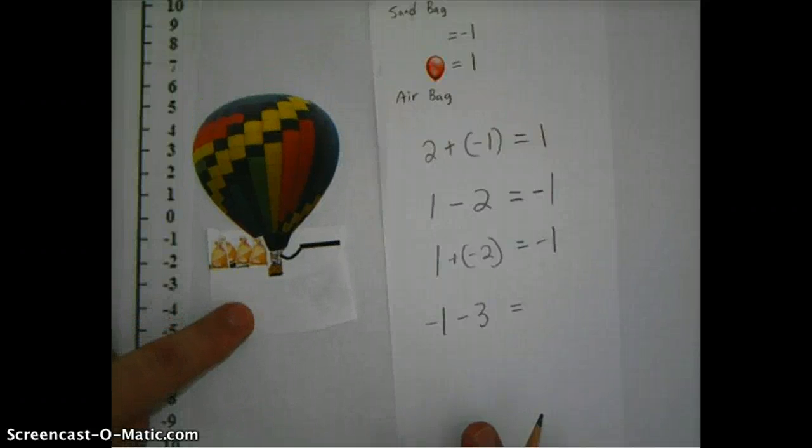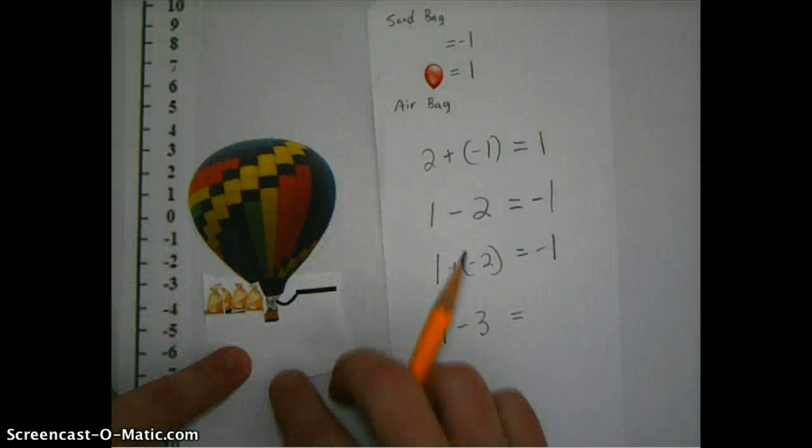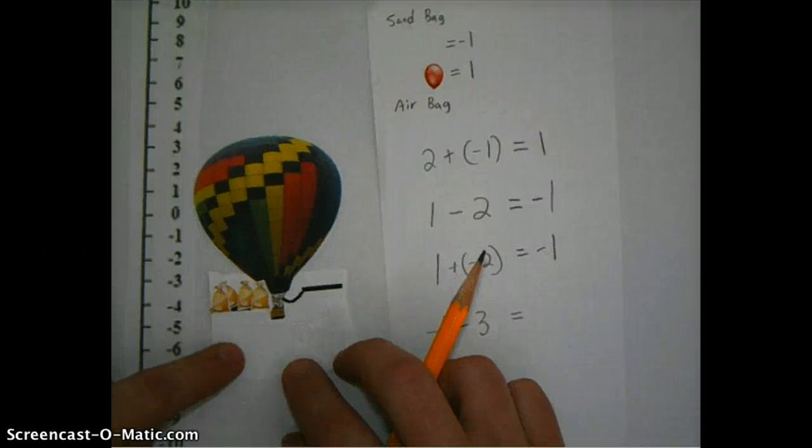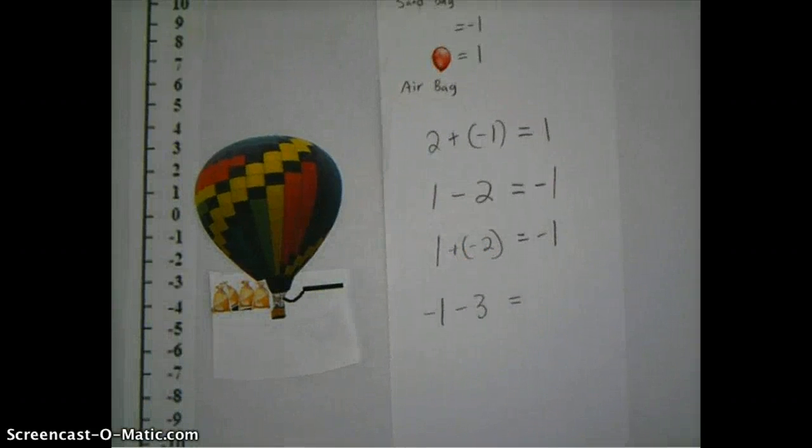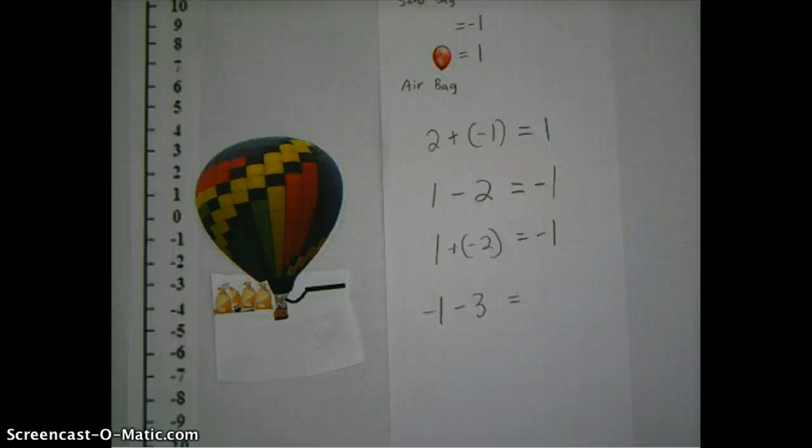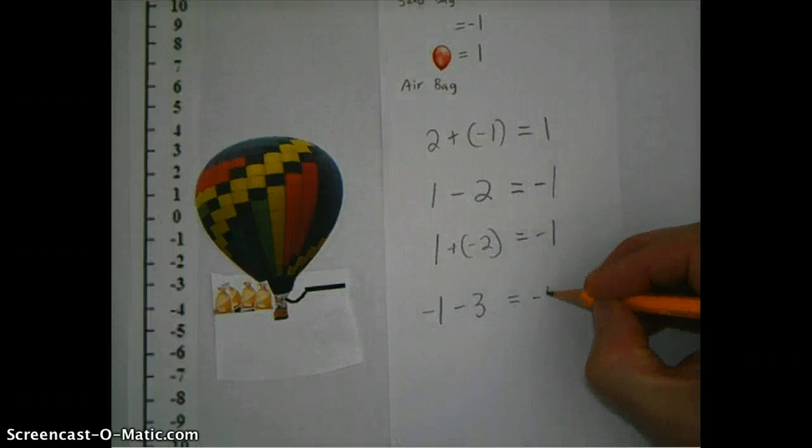So it's going to drop down one, two, three, three measures of altitude in this here. So the altitude is dropped by three. Okay, which leaves me ending up at minus four.